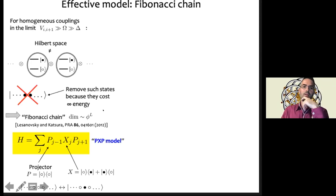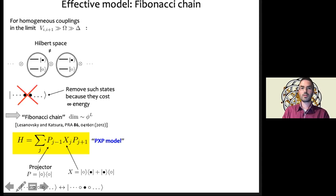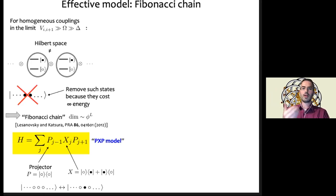In this limit, the Hamiltonian becomes really simple — just the Rabi-flipping term dressed by projectors onto the ground states of neighboring atoms. The projector P_i is defined as a projector on the local ground state, and X is the Pauli matrix. This means you can locally flip a spin or excite a Rydberg atom only if both of its neighbors are in the ground state. If one neighbor were excited, that flip would be frozen. This is what we call the PXP model.